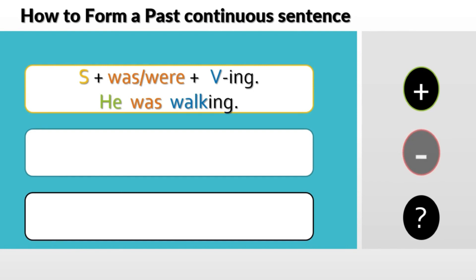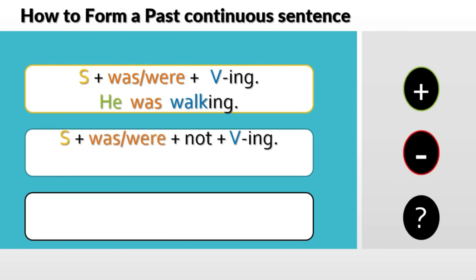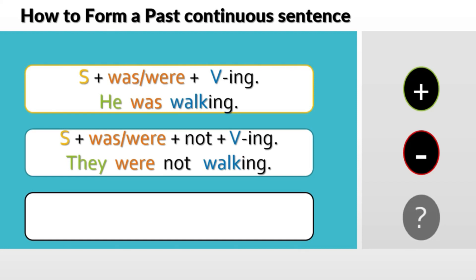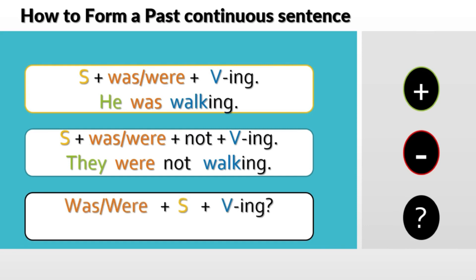For the negative past continuous sentence, that would be subject plus 'was' or 'were' plus 'not' to make it negative, plus the verb and the suffix -ING. For example: 'They were not walking.' A past continuous question would be 'Was' or 'Were' — capitalized at the beginning — plus subject plus verb plus -ING and a question mark. For example: 'Was he walking?'